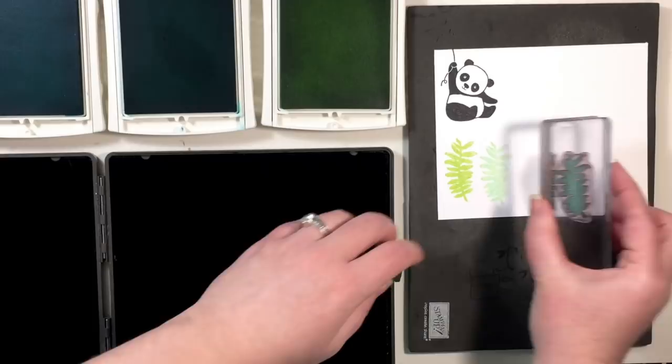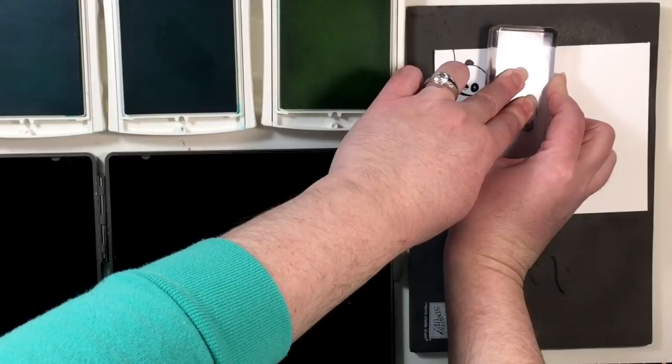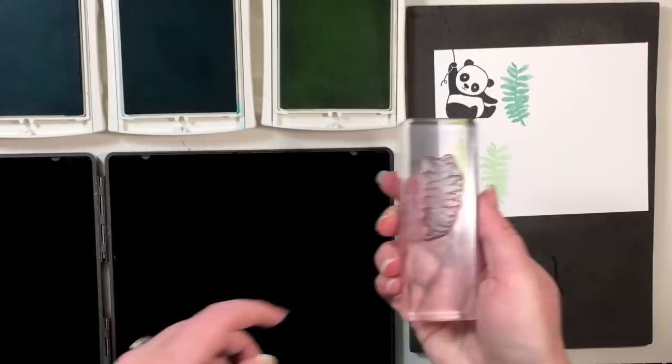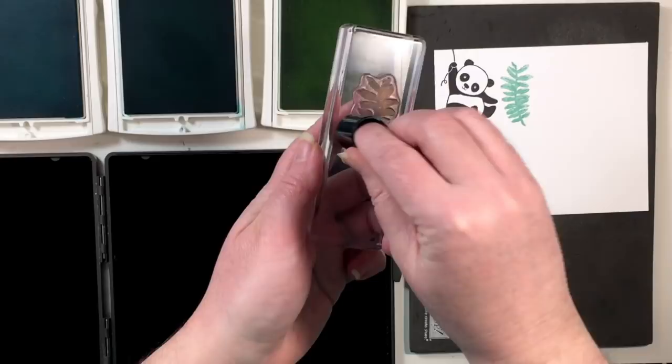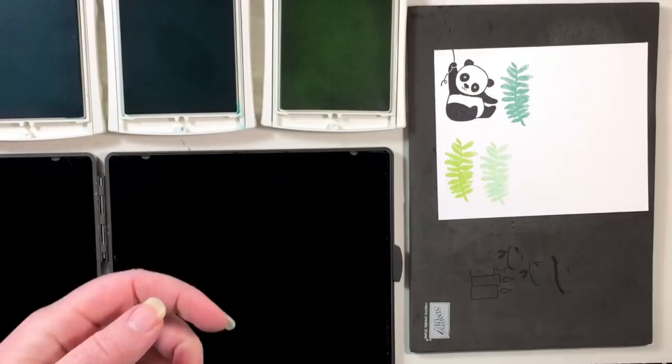So we've got our Emerald Envy here. So we're going to stamp that down with full ink. And remember we're going to fussy cut all these out. So just be aware of that when you are stamping them down. So now I'm going to take some of my Lemon Lime Twist and sponge a little bit on there and some of that Bermuda Bay. Huff again and stamp that down.